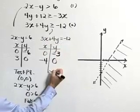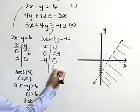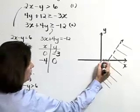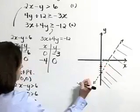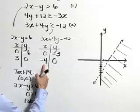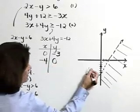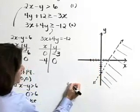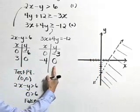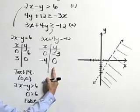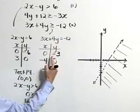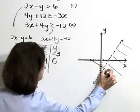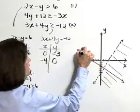So the boundary line goes through the point (0, negative 3) — that's x equals 0, y equals negative 3 — and also through (negative 4, 0) — that's x equals negative 4, y equals 0. As we graph this line, we're going to graph it as a solid boundary line because our inequality does include the equal-to sign.